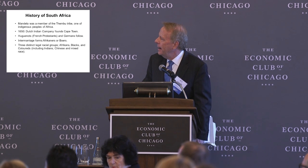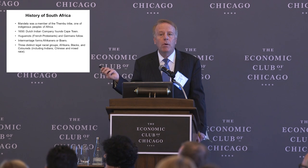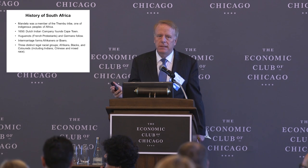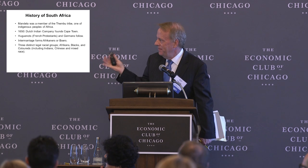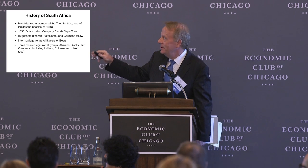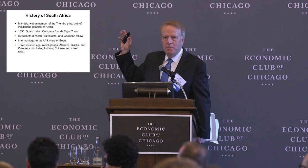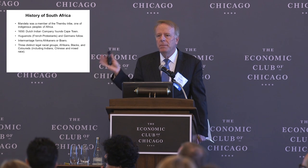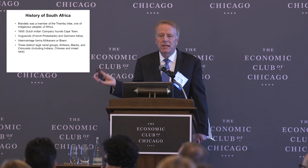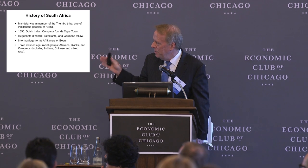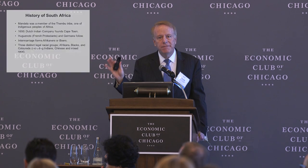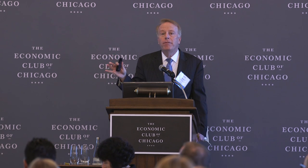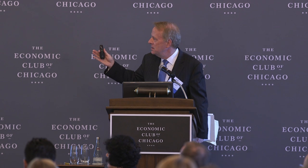In apartheid South Africa and even before, there were three legal races that were distinctly treated differently in the legal code: the Afrikaners, the blacks, and — a word we don't use today but is actively used in South Africa — the coloreds, who were people of mixed race, often including Chinese and sometimes Indians. The Indians were often a separate group. Eventually you'll see in parliament there were three different houses for the Afrikaners, the Indians, and the coloreds.